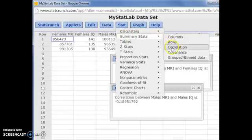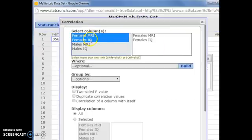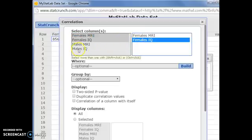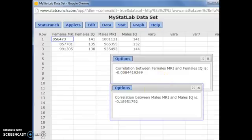And I did that: stat, summary, stats, correlation. And for females, you would select those two and hit compute. For males, you would select those two and hit compute. And so there's our values.